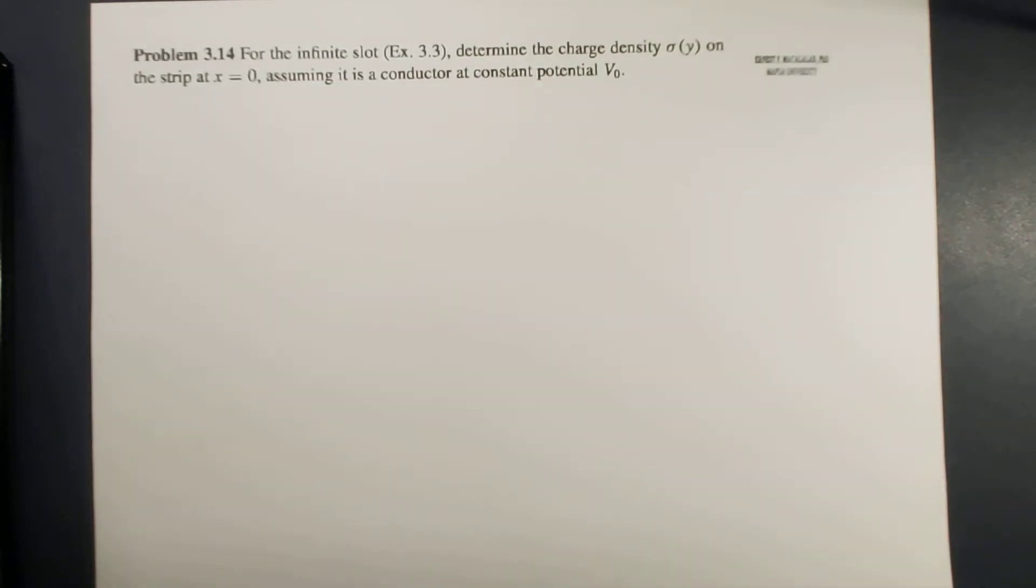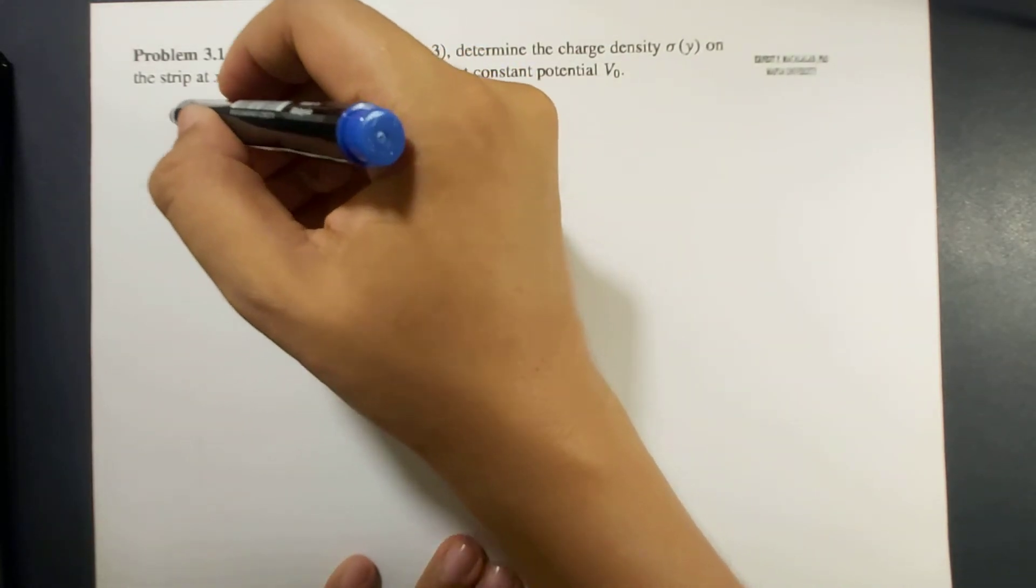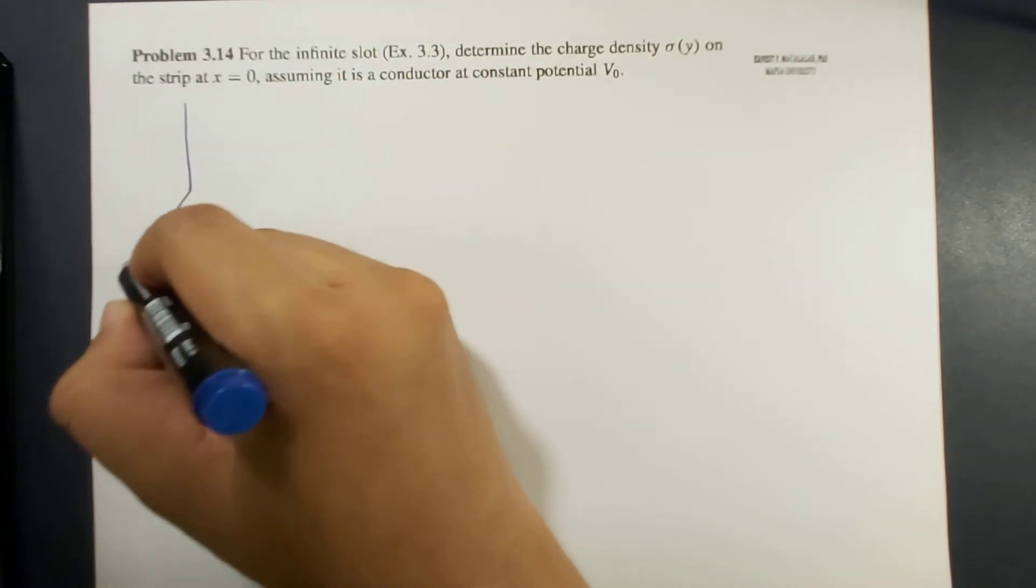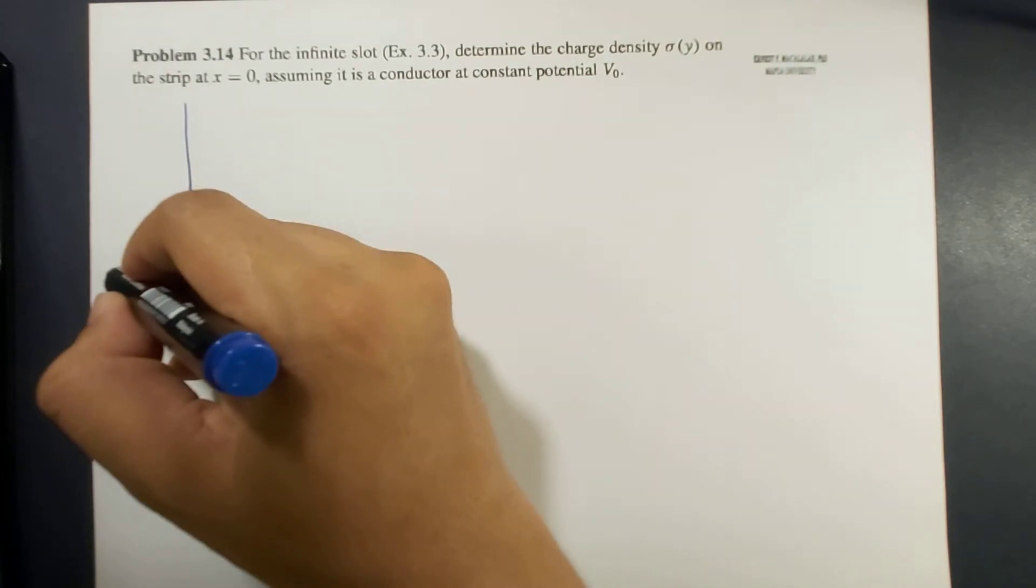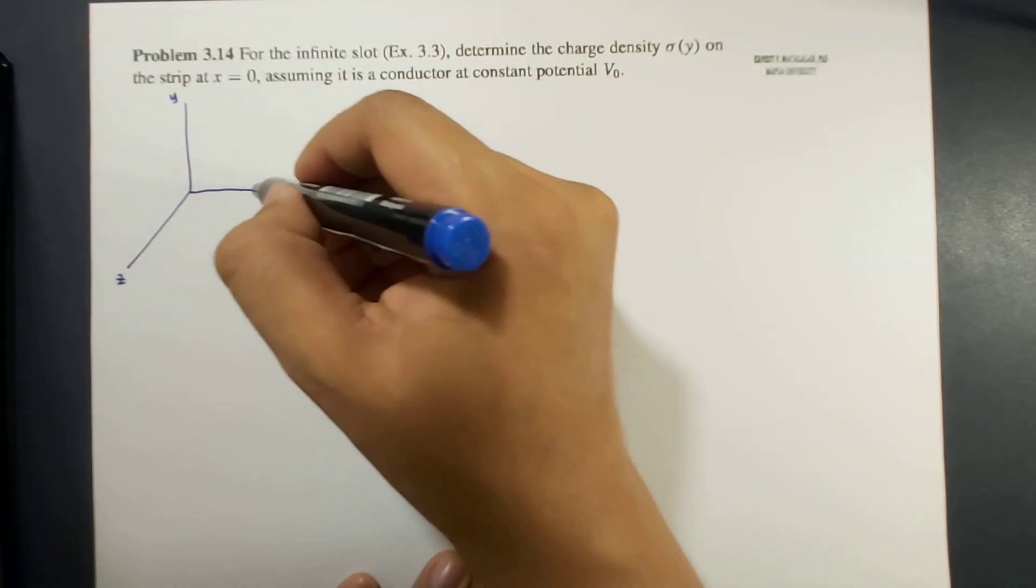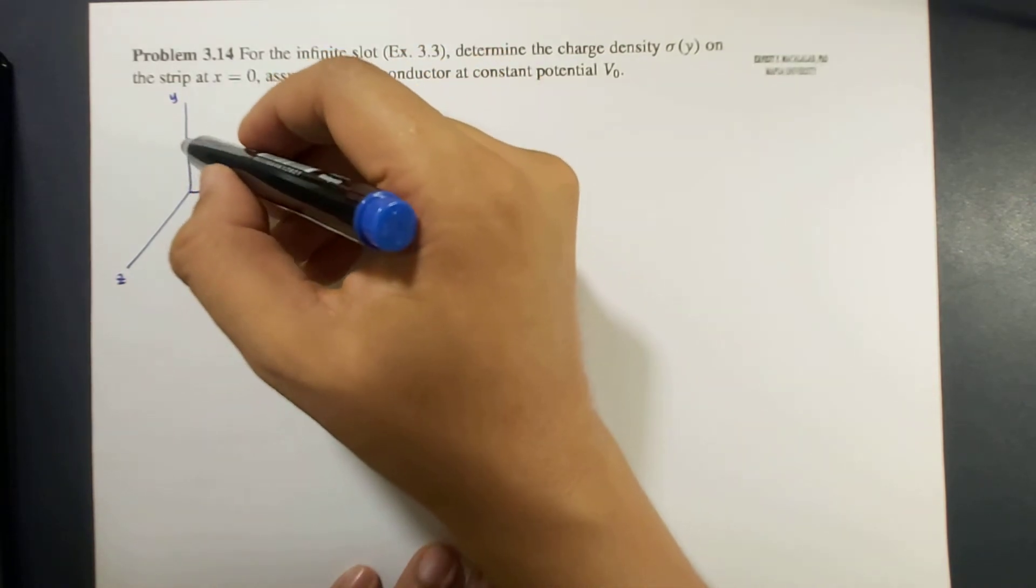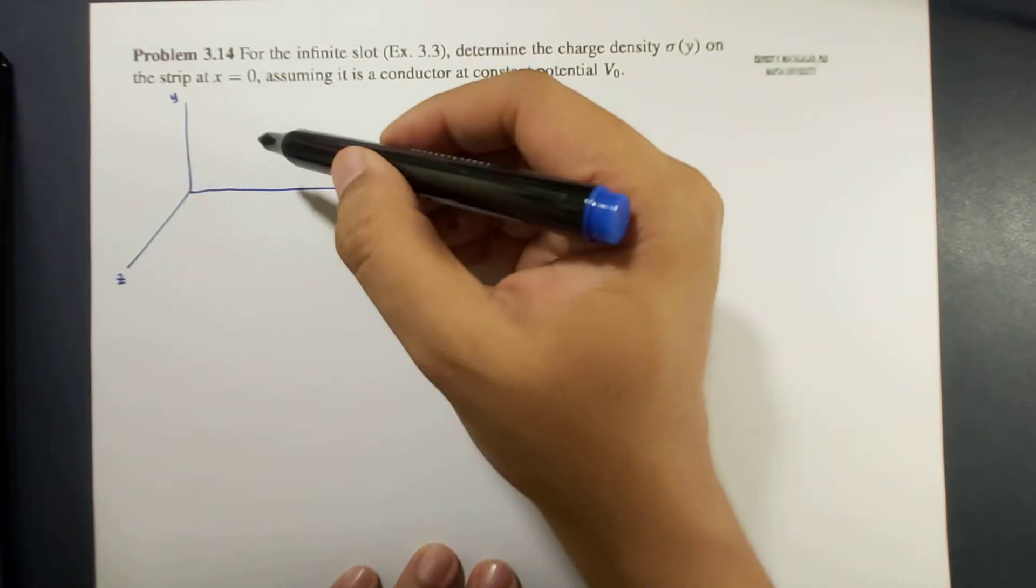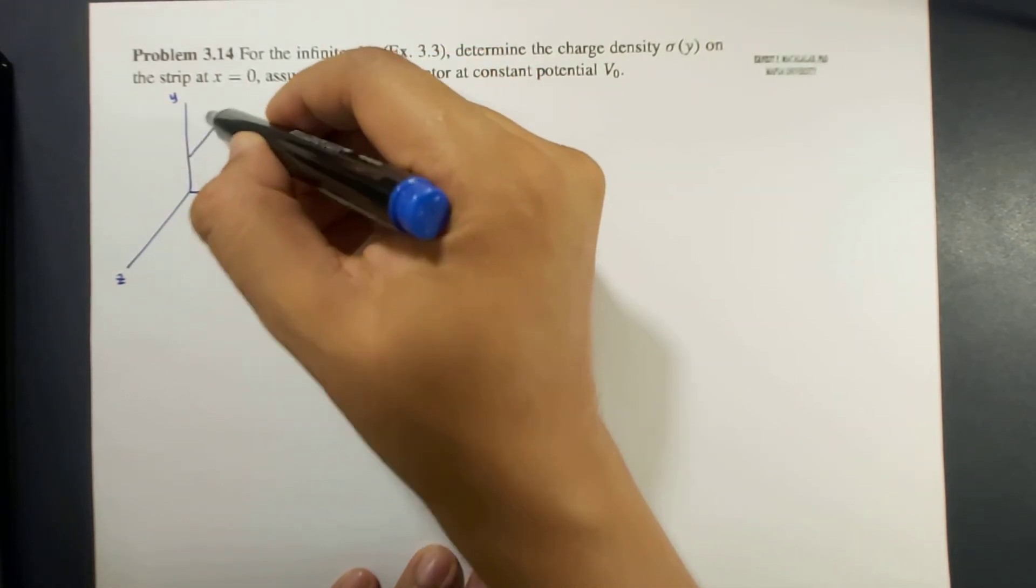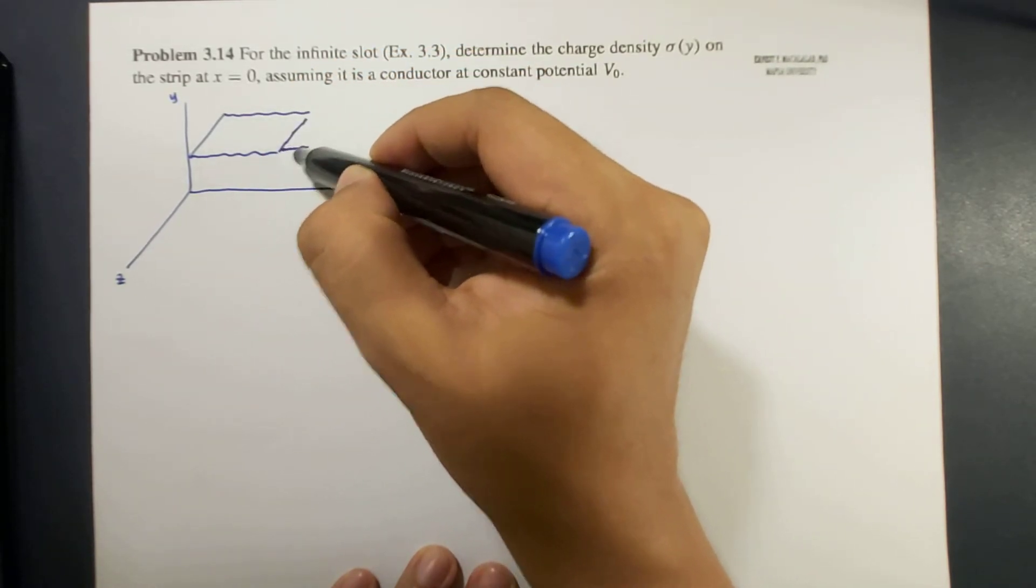Okay, so if you still remember the example 3.3, something like this. So this is your z, y, and then your x-axis, and there are two infinitely long metal sheets that are parallel to each other. One is here, and the other one is here.